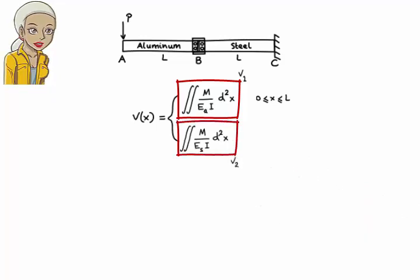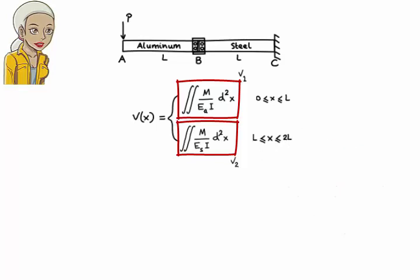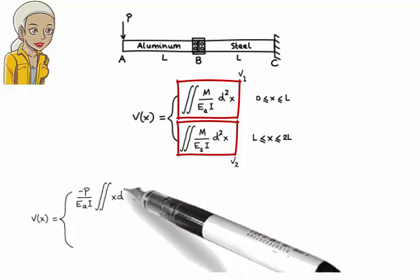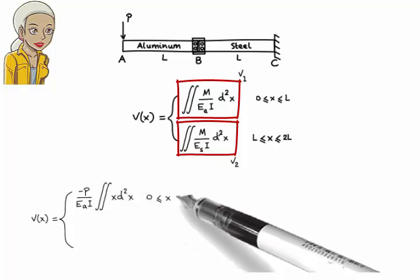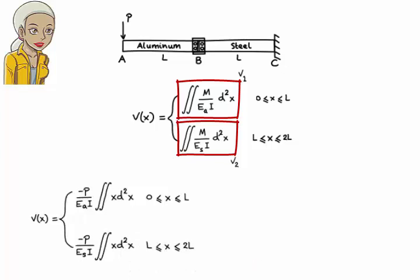Substituting negative Px for M, we get the expressions for V1 and V2. Furthermore, since E sub S equals 3 times E sub A, let's rewrite V2 using E sub A.